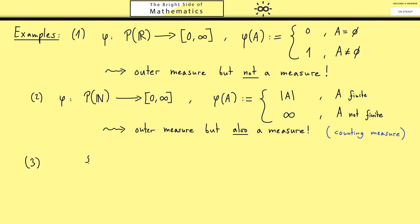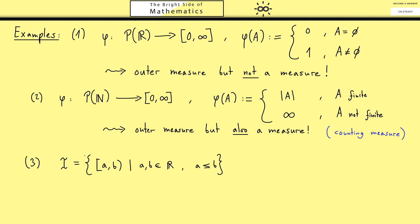Maybe you already guessed it — it should have something to do with the Lebesgue measure. The best starting point is the one-dimensional Lebesgue measure, which we use to measure normal lengths. For intervals we can write down the length immediately, so we consider the set of all bounded intervals, which I call the curved I. For the length of such an interval, we use a function mu, where mu of the interval is given by b minus a — the normal length of an interval.